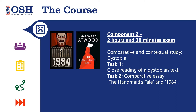Component 2 is also two and a half hours long, and it's a comparative and contextual study. The theme you'll be looking at is dystopia. Task one involves a close reading of a dystopian text, and task two is a comparative essay looking at The Handmaid's Tale by Margaret Atwood and George Orwell's 1984.